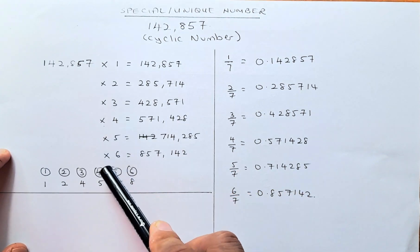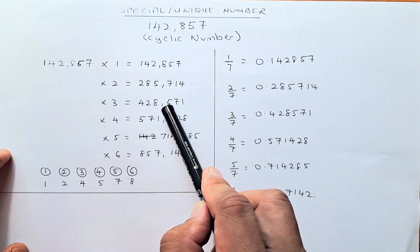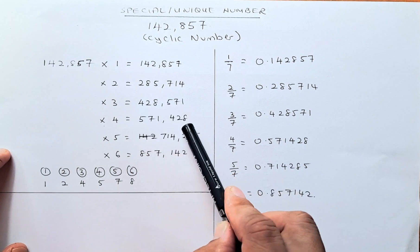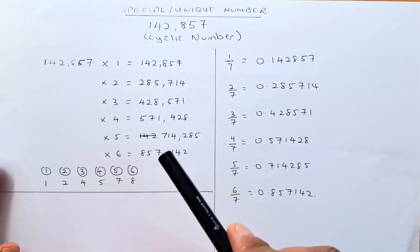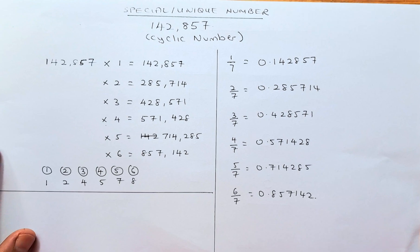Similarly, the fourth biggest number is 5, so you start at 5, so 571428, and so forth. And that is why it is called a cyclic number.